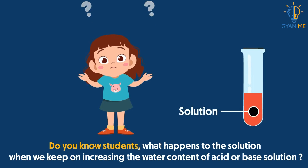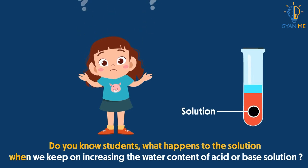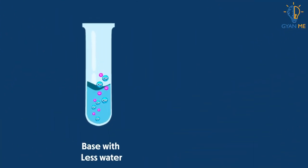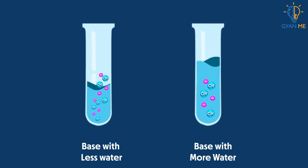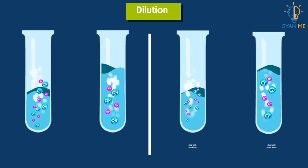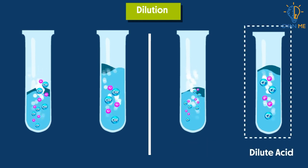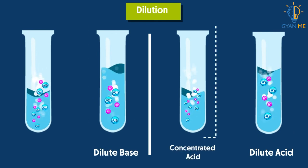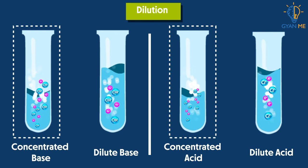Do you know students what happens to the solution when we keep on increasing the water content of acid or base solution? It results in a decrease in the concentration of ions per unit volume relative to its previous solution. Such a process is called dilution, and the acid or base solution is said to be diluted. Dilute acids or bases have more amount of water, while concentrated acids or bases have less amount of water.